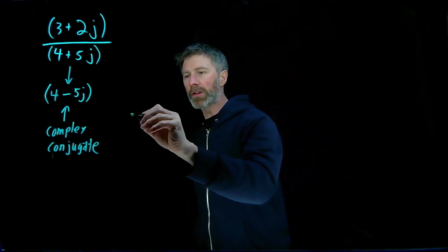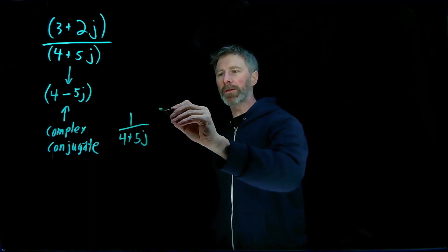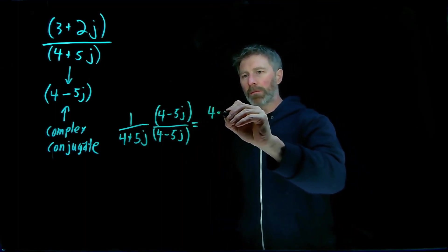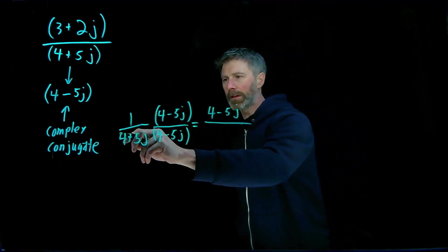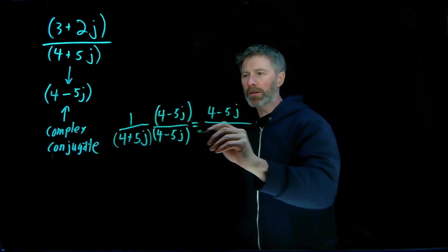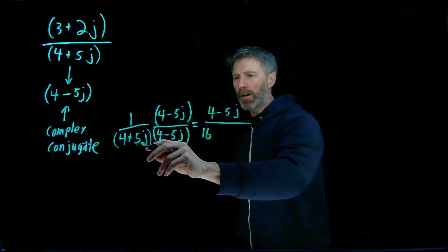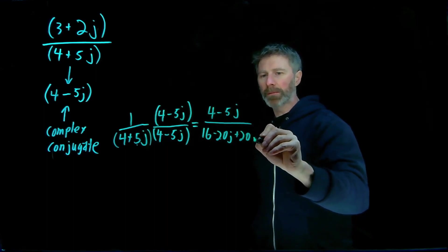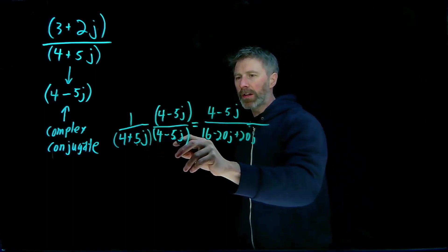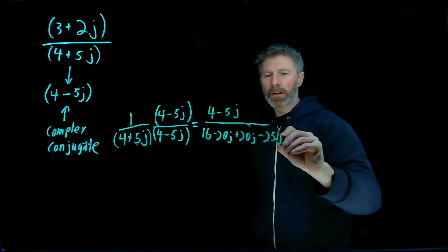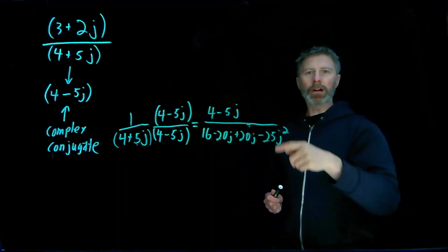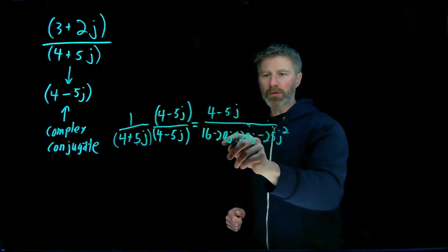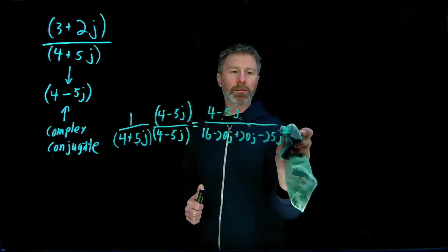So to get the inverse of 4 plus 5j, I actually need to take that number 1 over 4 plus 5j and multiply both the top and the bottom by the complex conjugate. And what I end up with is 4 minus 5j over, well, to get the denominator I need to expand this out so I get 4 times 4 is 16, 4 times negative 5j is minus 20j, 5j times 4 is plus 20j, and then finally I get plus 5j times negative 5j, I get negative 25j squared. And remember, j squared is equal to negative 1, so what this is going to end up with will be 16 plus 25. So this minus 20j and this plus 20j they're going to cancel out and they end up with 16 plus 25 on the numerator.